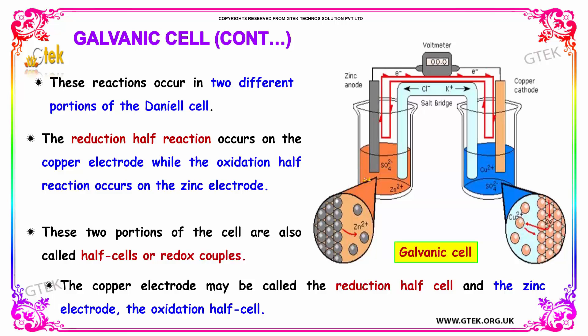The reduction reaction occurs at the copper electrode, while oxidation occurs at the zinc electrode. These two portions of the cell are also called half cells or redox couples. The copper electrode is called the reduction half cell, and the zinc electrode is called the oxidation half cell.